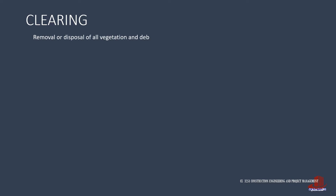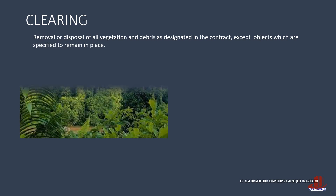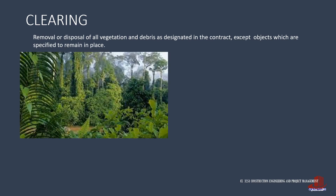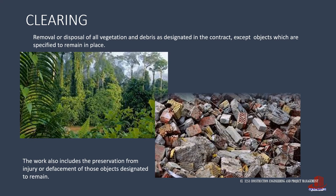Clearing and grubbing is defined as the disposal of all debris and vegetation specified in the contract from the project site, although not all should be cleared out, as there are some objects which are also specified to remain in place due to their static volume.